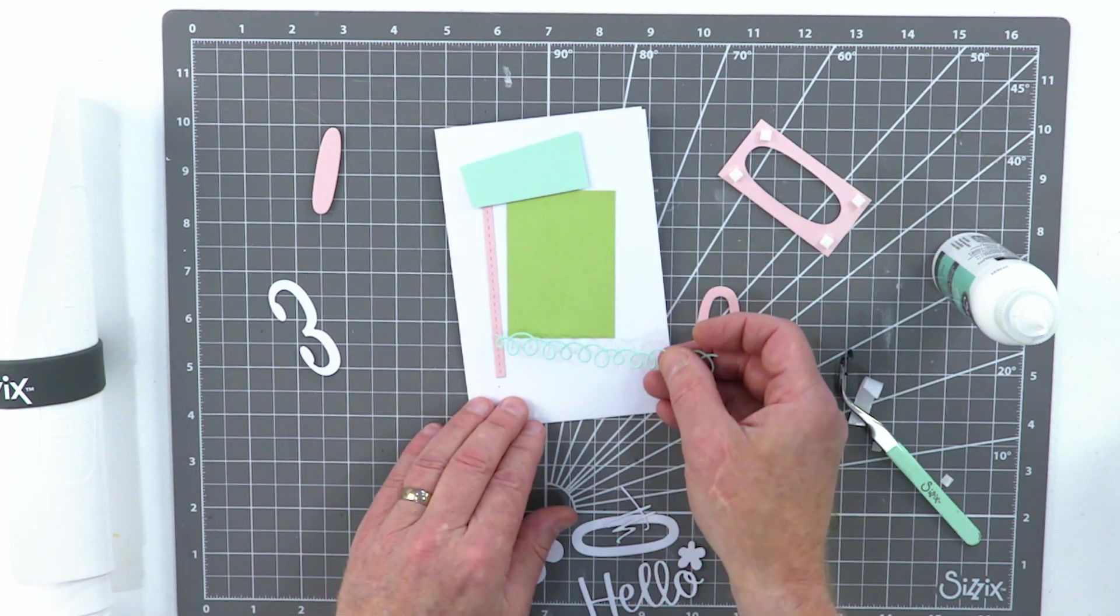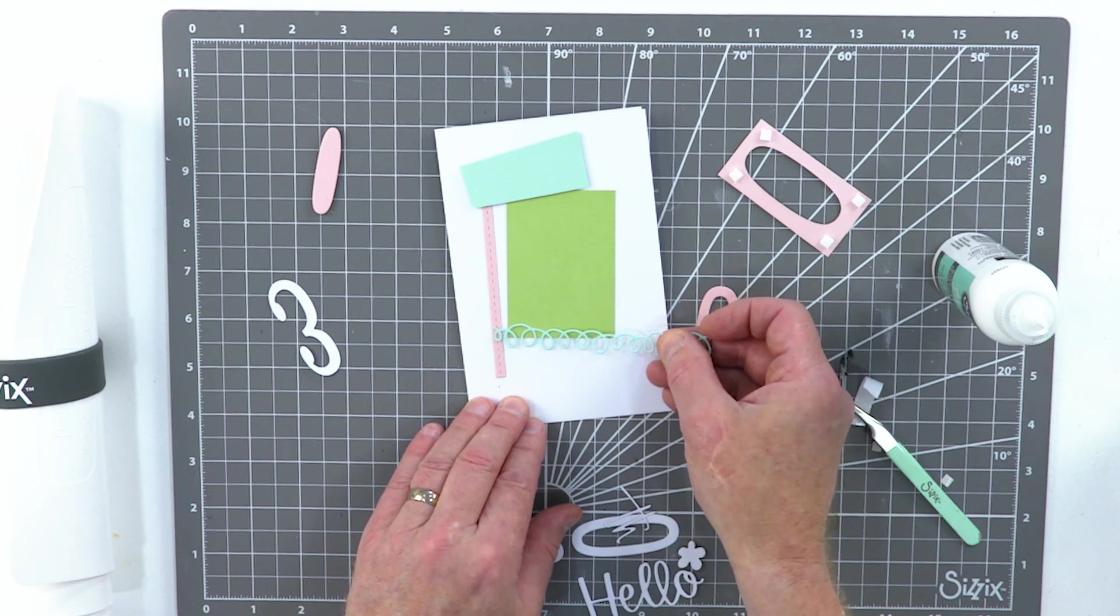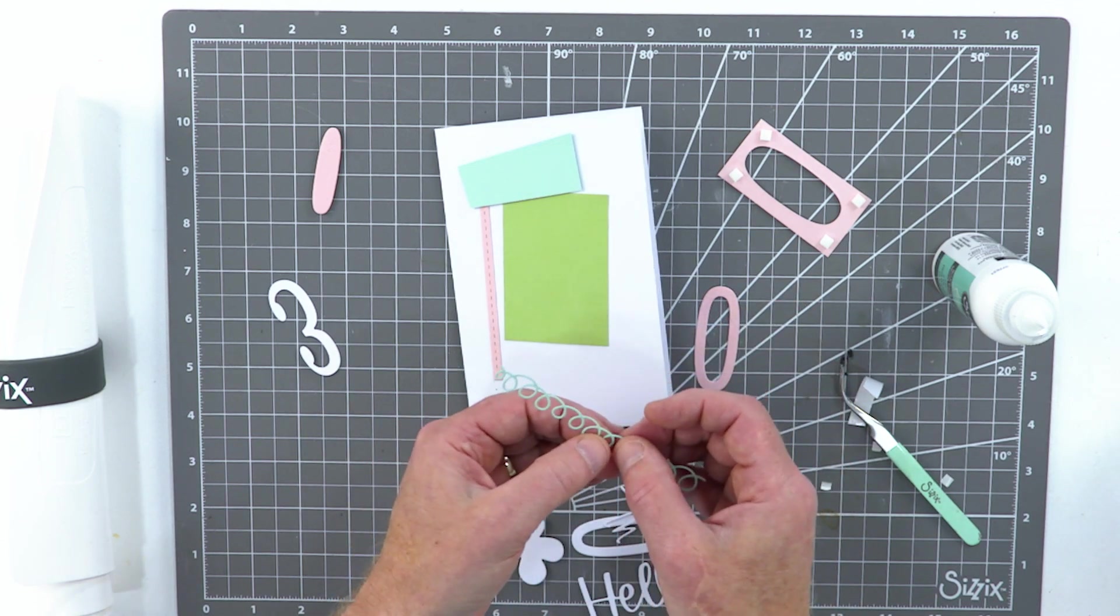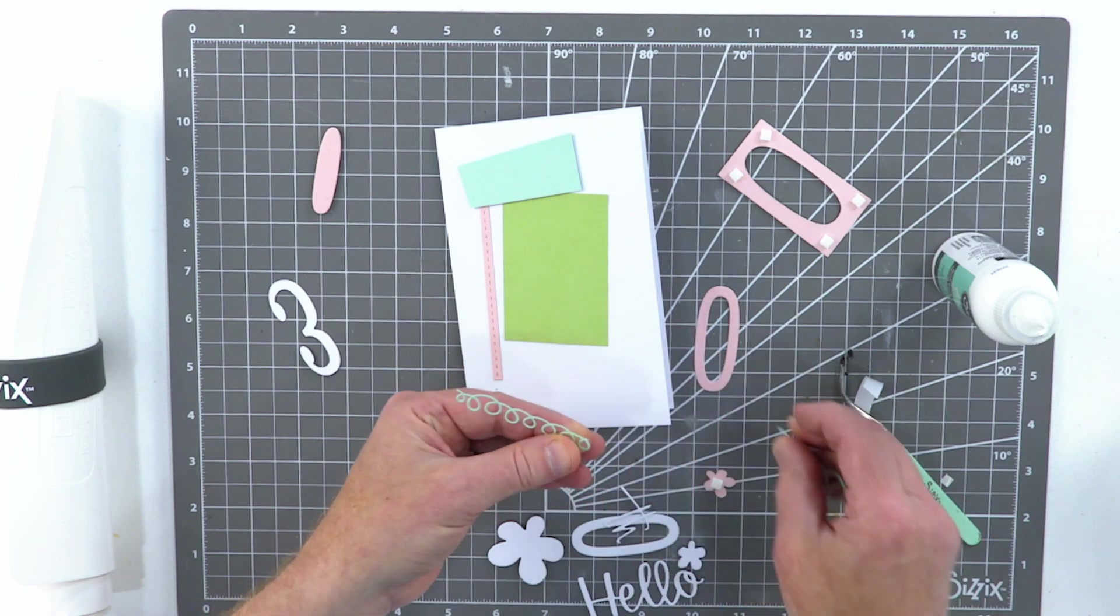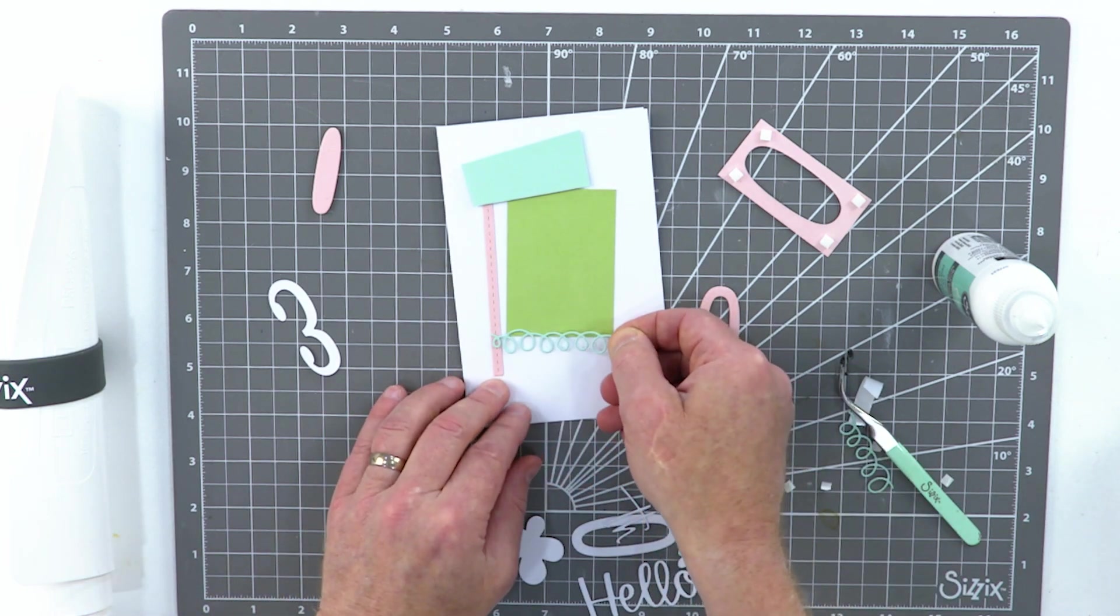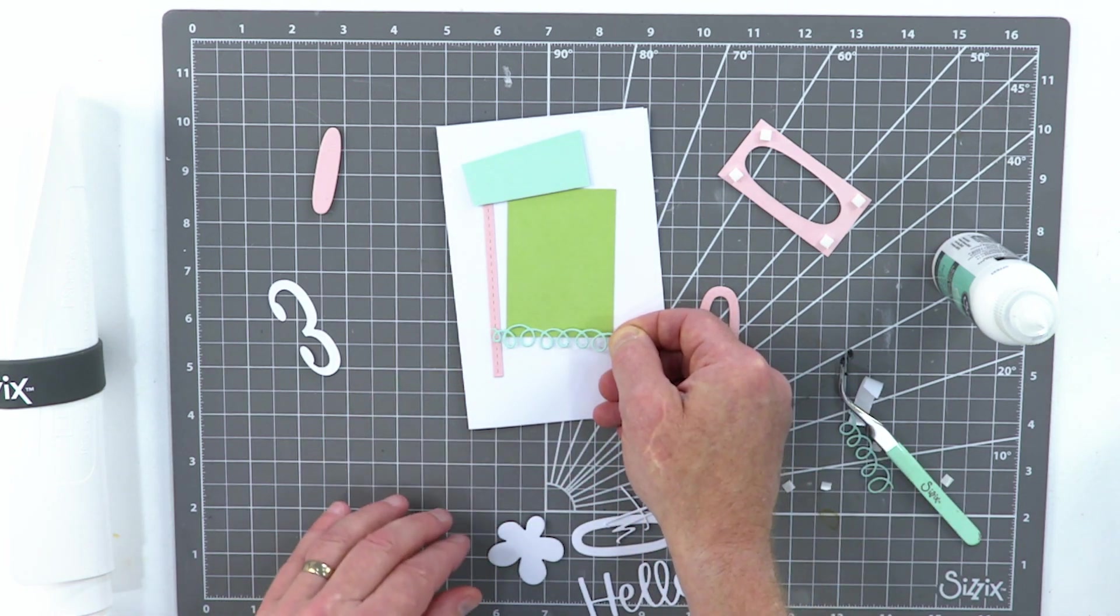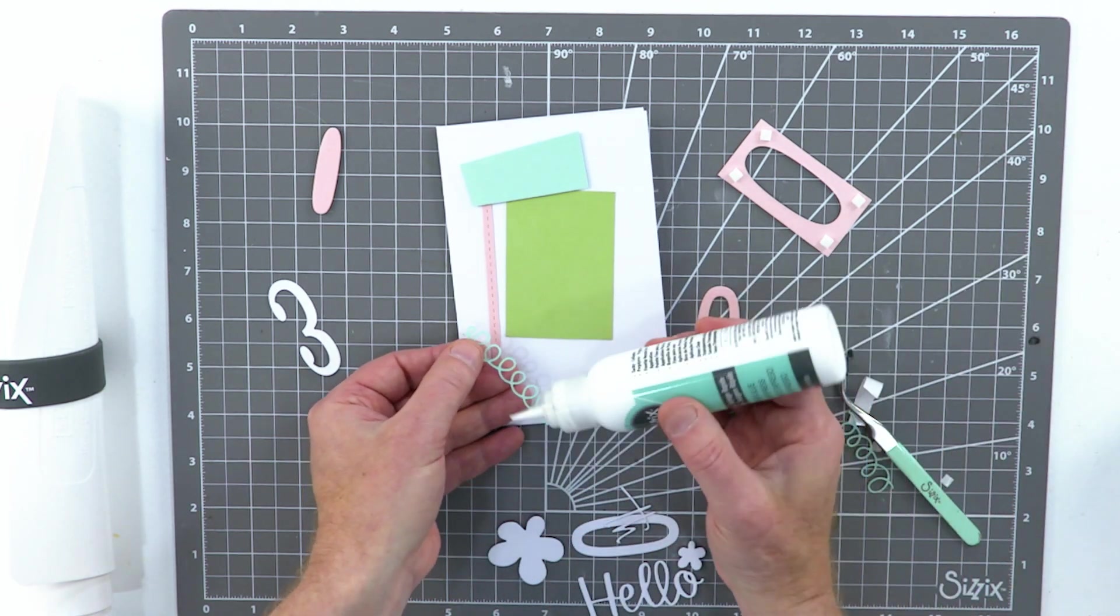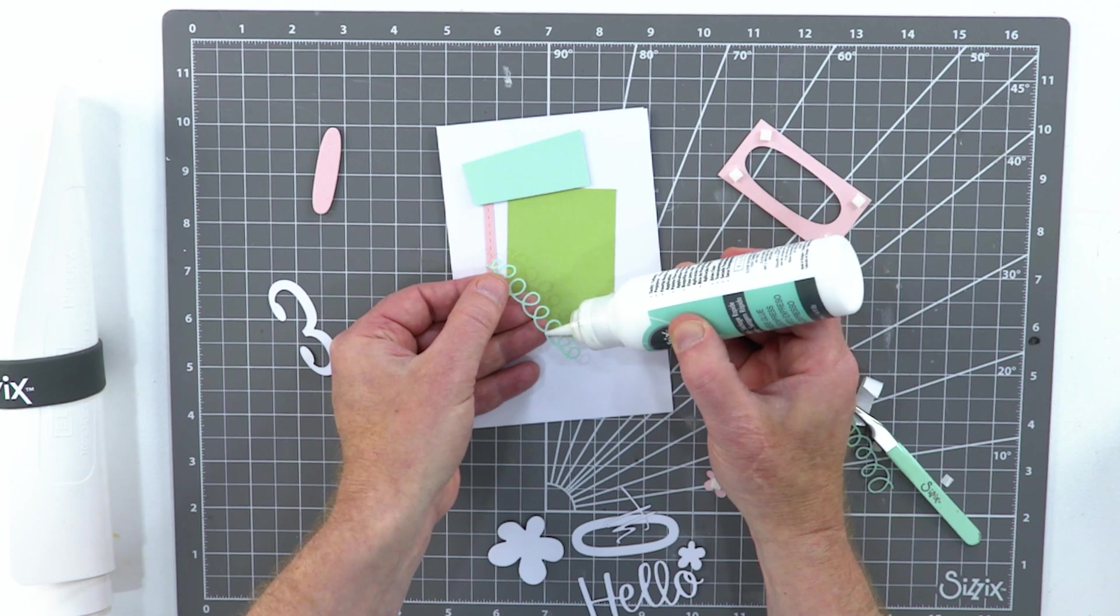So we're using the number three and the negative of the zero. Something I do like to do, obviously very often I like to use these lovely foam pads to make sure that we're getting a bit of depth in there, so we're using the shadow as well. All right, so that's starting to look good.